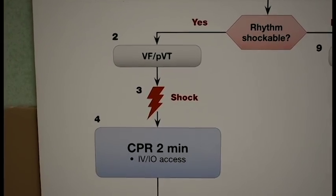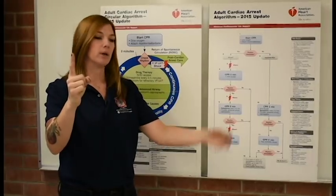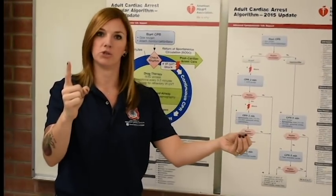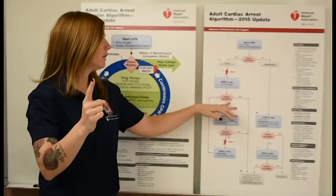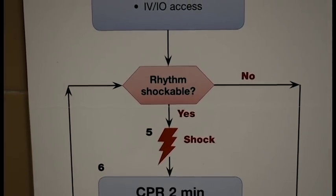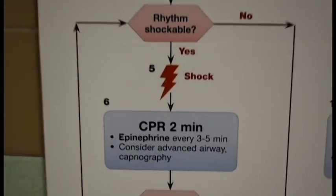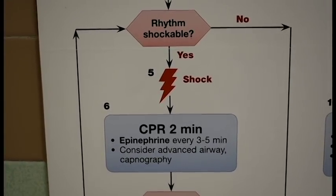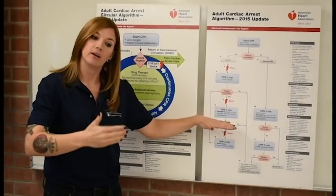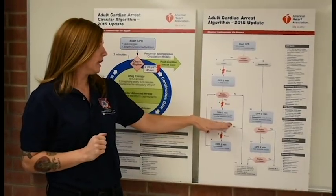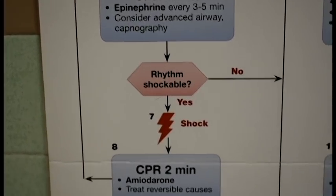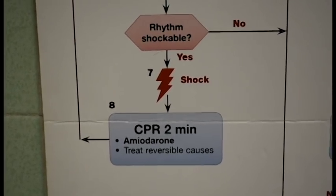During those two minutes, you want to drop an OPA, bag the patient, start an IV, do all the things you need for your patient. Then we check for a pulse again. If it is still shockable, we follow on down the algorithm, defibrillate your patient again, and at that time you would give epinephrine — every three to five minutes. If you come to a shockable rhythm again on your third defibrillation, you would shock your patient again.